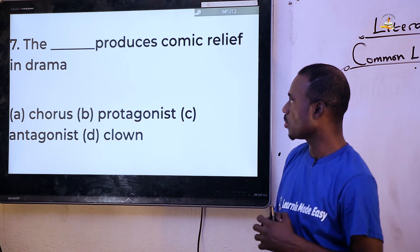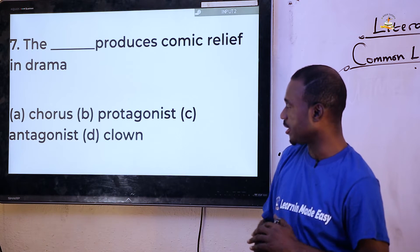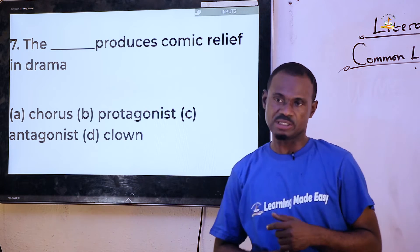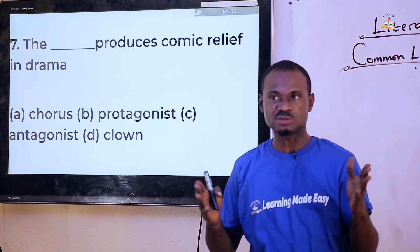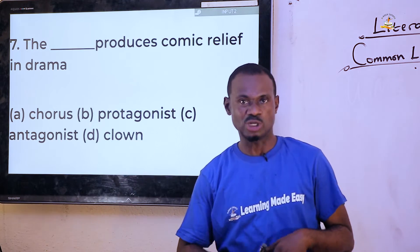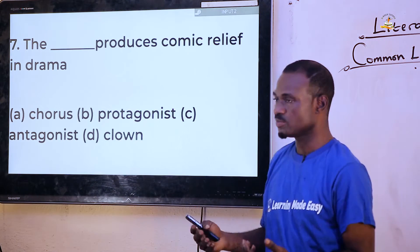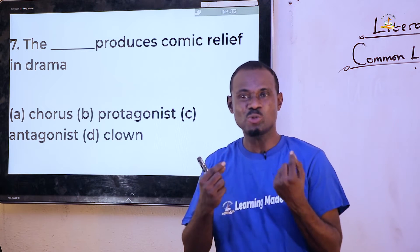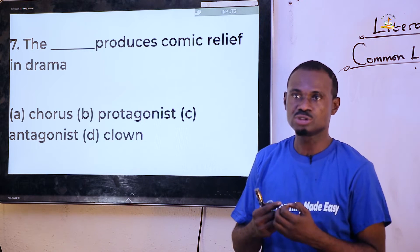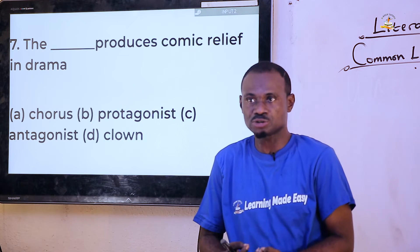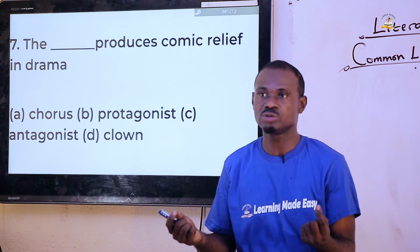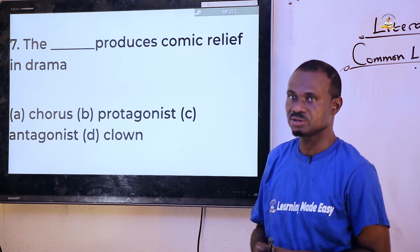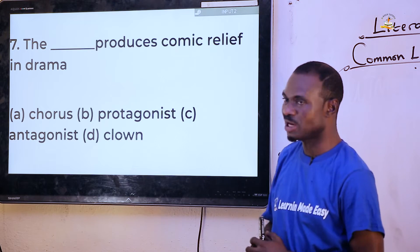Question seven: 'The dash produces comic relief in drama.' Options are chorus, protagonists, antagonists, and clown. The correct answer is clown, otherwise known as a jester. That is the person who creates humor — when a drama is too tragic, the clown is called upon to play a short role just to create a humorous scene and reduce the tension.